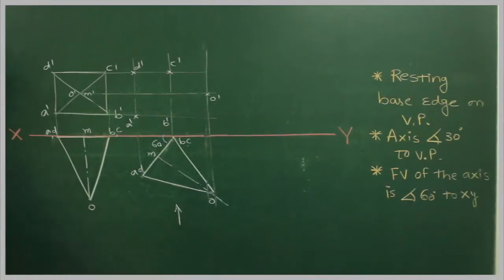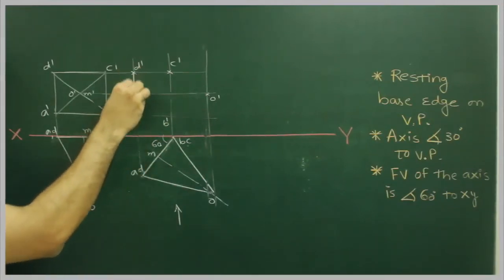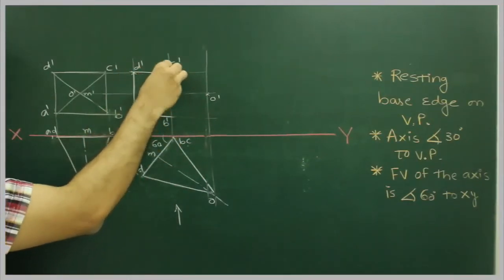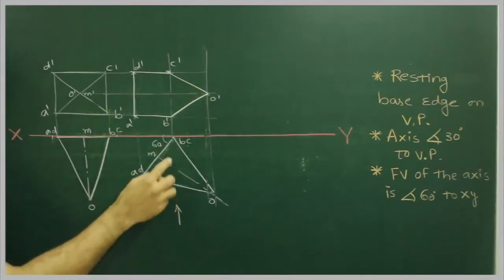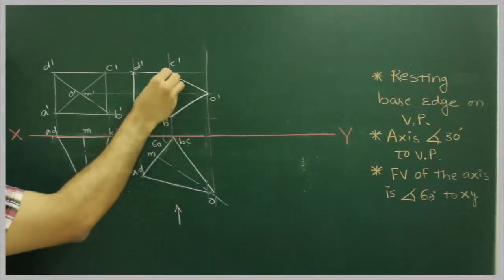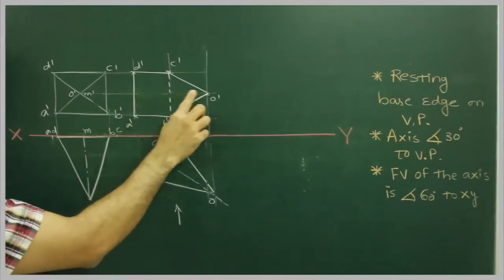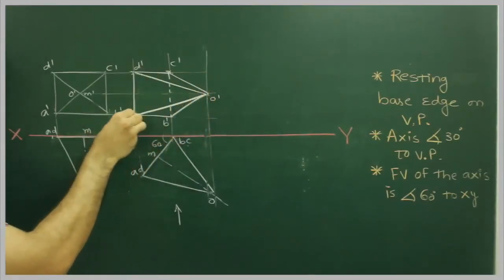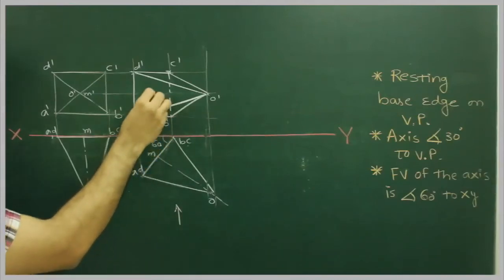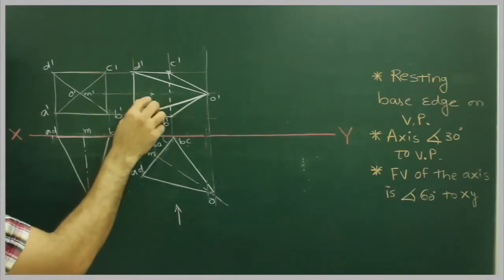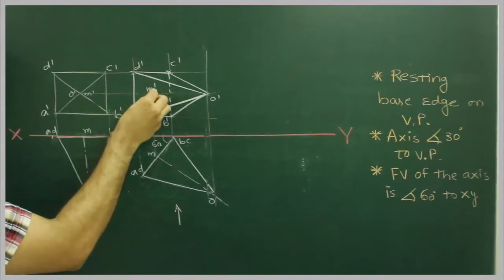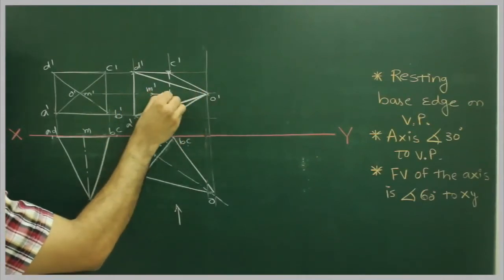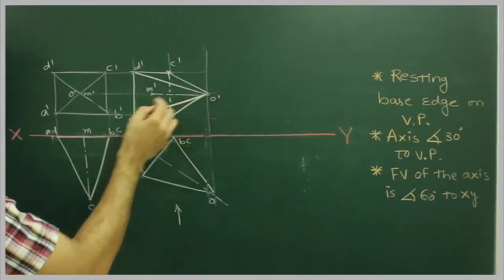Now observer will see from this side. So first boundary line will be dam. Then bc is that way from here. So b dash, c dash will be dotted. o dash, d dash is dark. m is here. Extend. So this is m dash. This is axis.